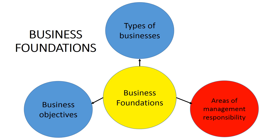In the previous video we looked at business objectives. In this video we are going to look at the five areas of management responsibility and see how they can each assist a business to achieve its business objectives.